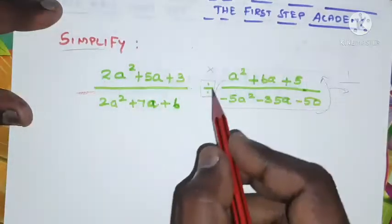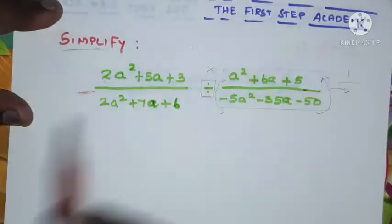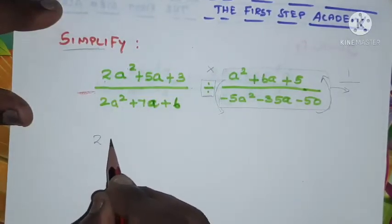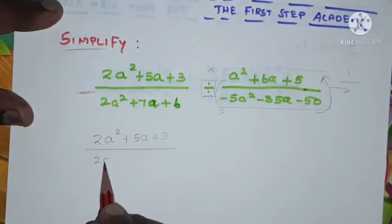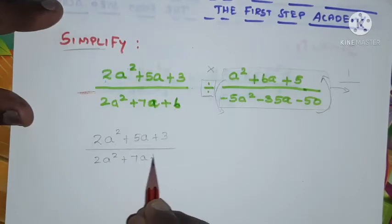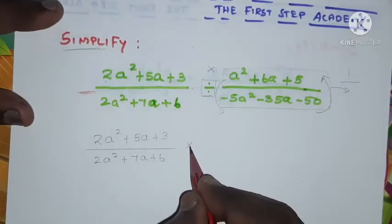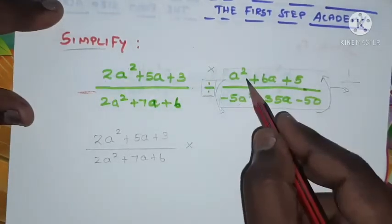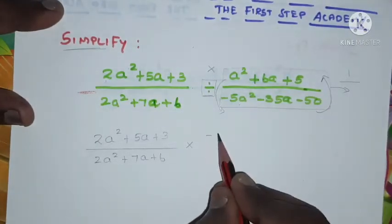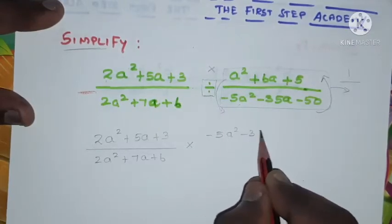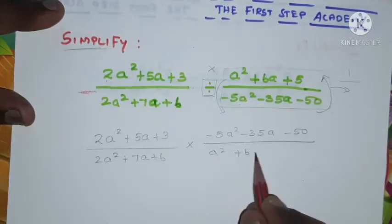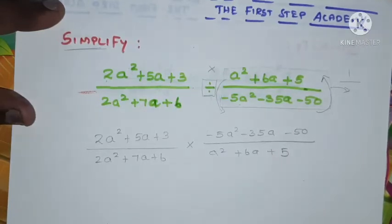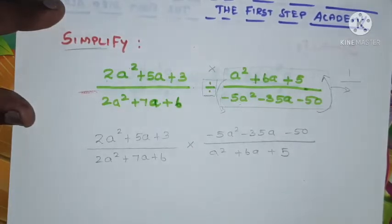I'm going to rewrite this problem with the operation changed to multiplication. So: 2a squared plus 5a plus 3 divided by 2a squared plus 7a plus 6, into — this is now multiplication — so the denominator becomes numerator: minus 5a squared minus 35a minus 50, divided by a squared plus 6a plus 5.